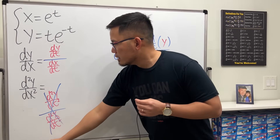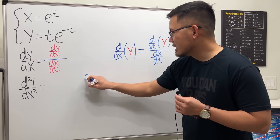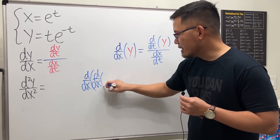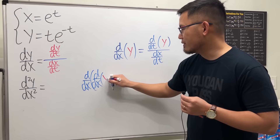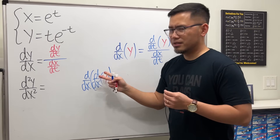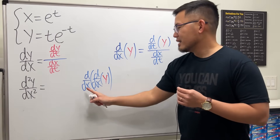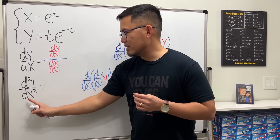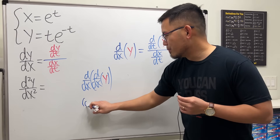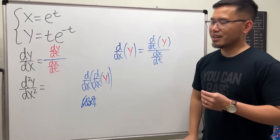Now for d²y/dx², I can look at that as d/dx of d/dx of y. You can see d times d gives d-squared — that's why we have the two for the d. And dx times dx gives dx-squared — that's why we have dx². Nobody writes it with parentheses as (dx)². Don't do that. This notation is perfectly okay.